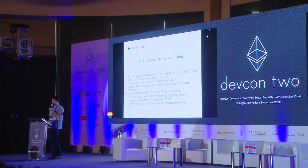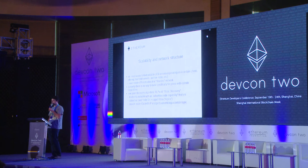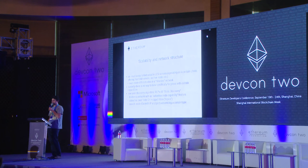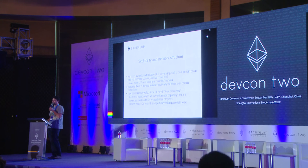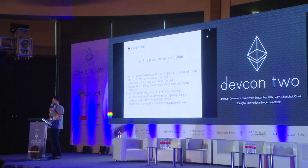I wanted to talk about the new Peer Discovery Protocol we're working on. It's an advertisement feature where nodes can advertise their capabilities — they can pick multiple category identifiers, or so-called topics, and advertise themselves under these categories. They can also look for nodes who advertise themselves under certain topics. One of such topics will be 'light server'.